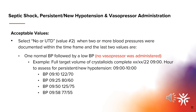Let's review when value two — no — would be selected for persistent or new hypotension present. We would select value two if there's a normal blood pressure followed by another normal blood pressure. We would also select value two if there was a normal blood pressure followed by a low blood pressure. Finally, we would select value two if there's a low blood pressure followed by a normal blood pressure. In this example, there's a blood pressure within normal limits followed by a hypotensive blood pressure. Since a vasopressor was not administered, we would answer value two — no — and a vasopressor would not be required.